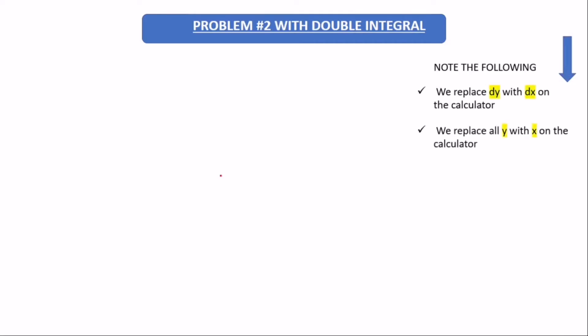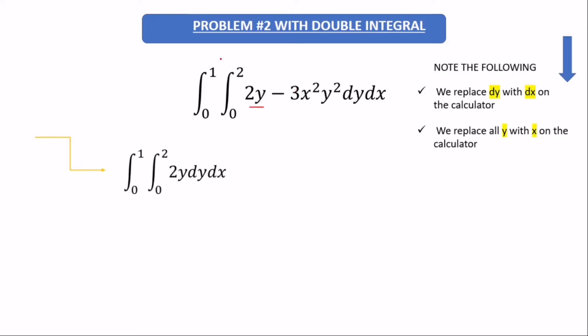Let's move on to problem two — I chose a more complex question so you can better understand. The same rules apply for problem two. With this type of question, we try separating the terms. So we separate it into: two y, then minus three x squared y squared, then apply the double integral sign to each member, and don't forget the dy dx.